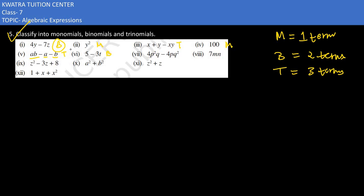In the seventh part, you would have a binomial. In the ninth part, we have three terms. There are z², 3z, and 8. So it would be a trinomial.